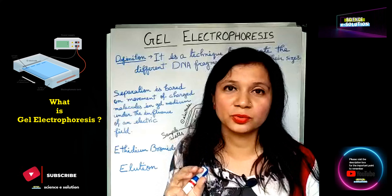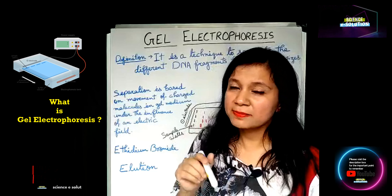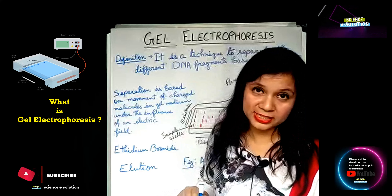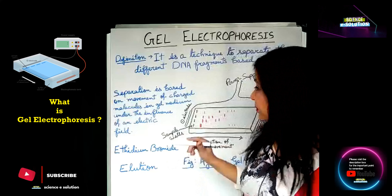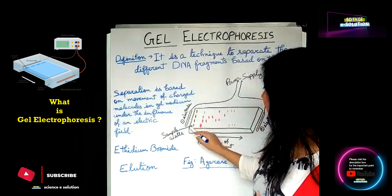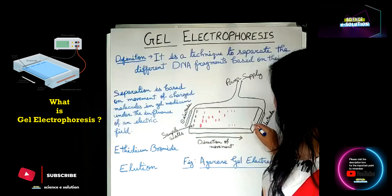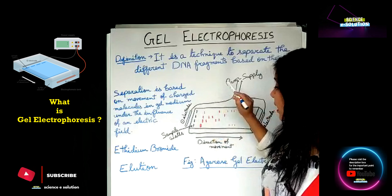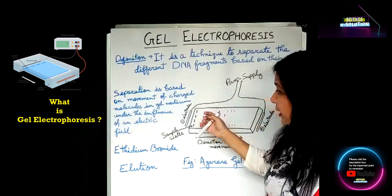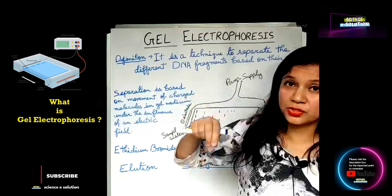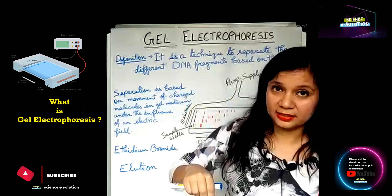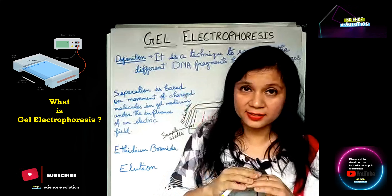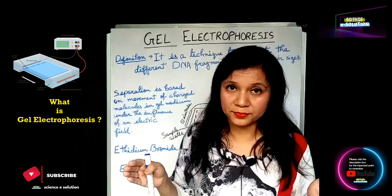So, how does the separation happen? First, for gel electrophoresis, we take a casting tray. We add agarose gel to this casting tray. The agarose gel makes a jelly-like medium.